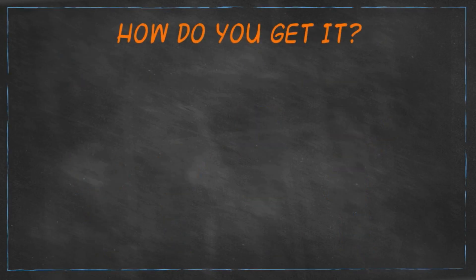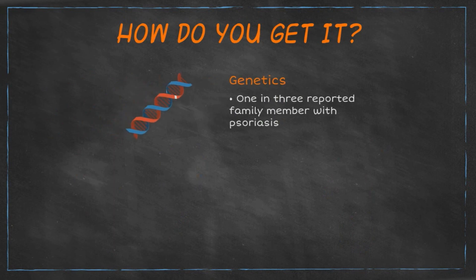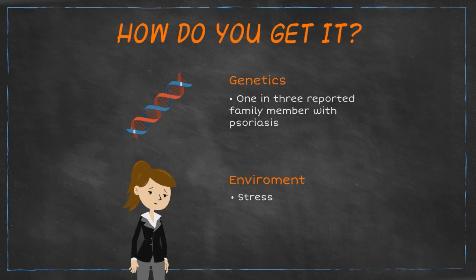Well, how do you get this disease? Genetics definitely plays a role as it has been found that 1 in 3 people diagnosed with psoriasis also has a family member who has it. In addition, environmental factors such as stress have been shown to play an important role in developing and worsening these symptoms, which we will now focus on.